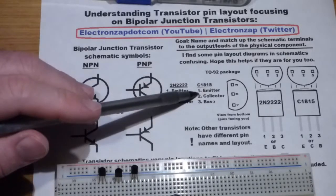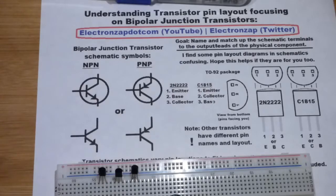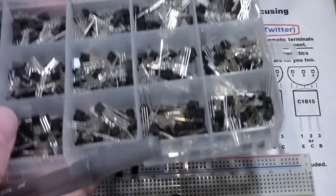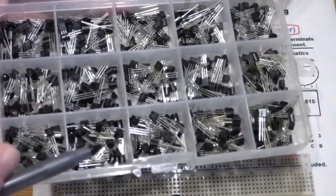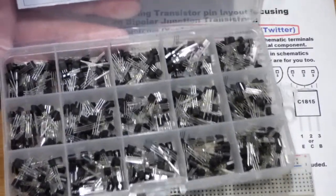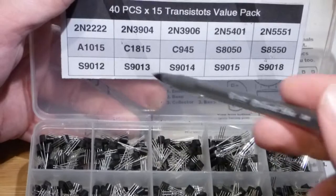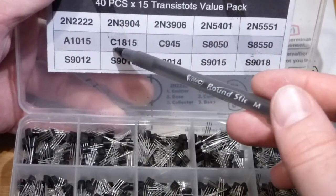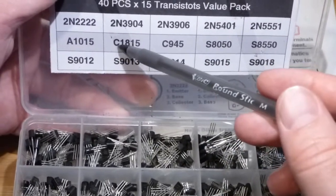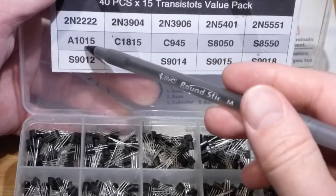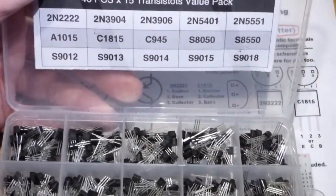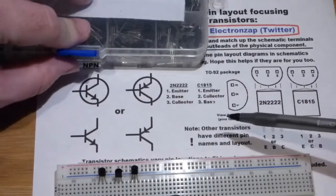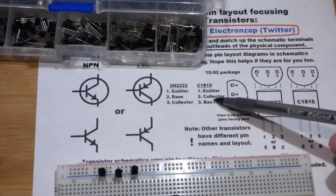Now, I added another transistor here, the C1815. The reason why I added this one is I have this transistor kit here with 15 different types of transistors. I had a much easier time finding an easy to read datasheet for the C1815 than I did for the A1015. That's the main reason why I picked it. But also, it has a different pin layout. It doesn't start with 2N, so you get suspicious that it has a different pin layout.